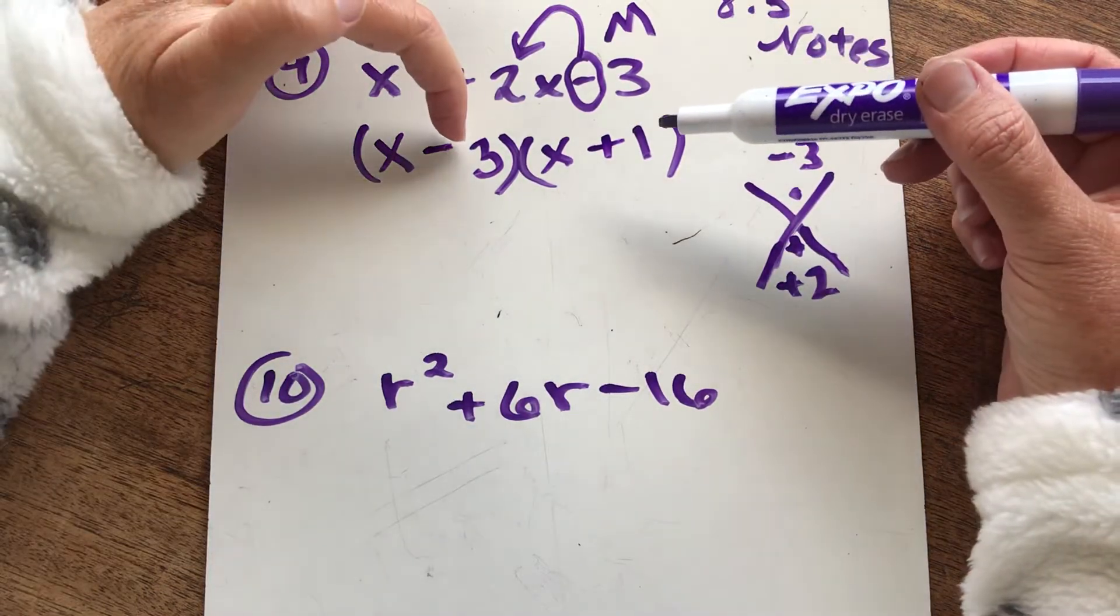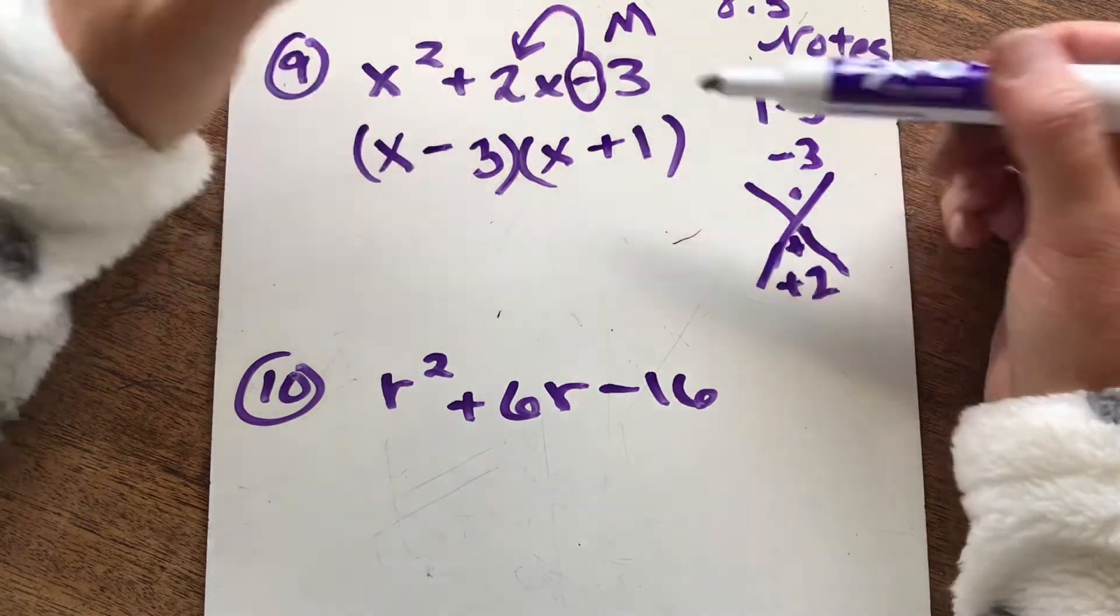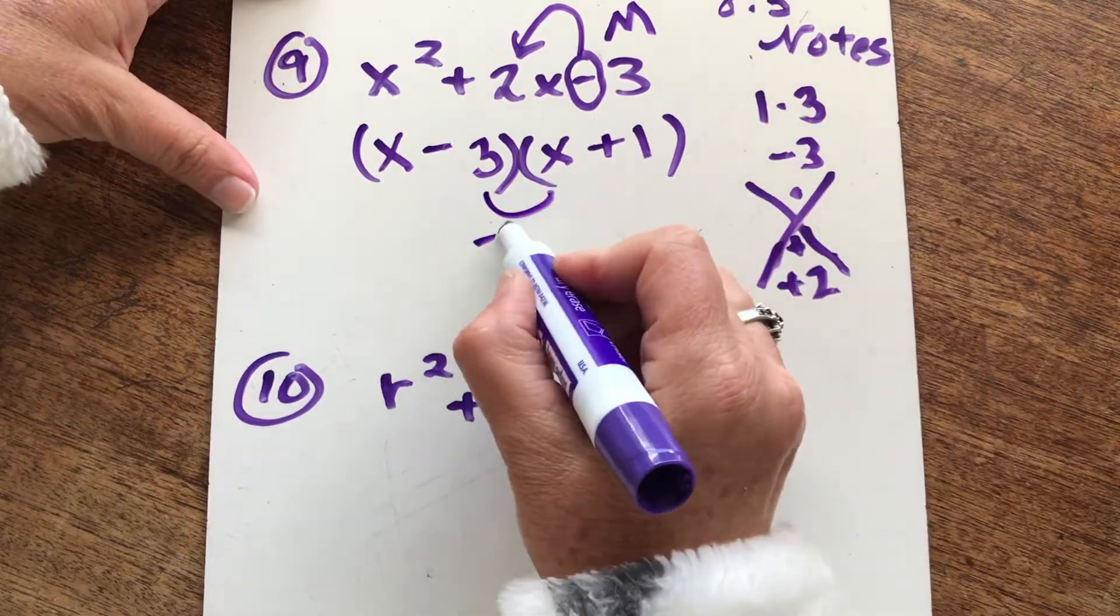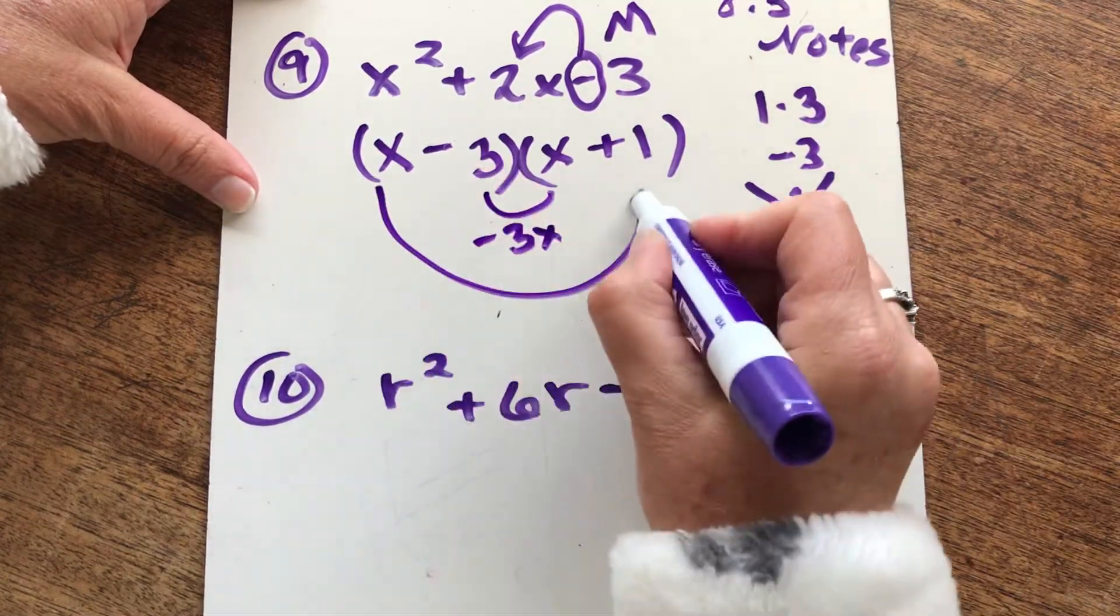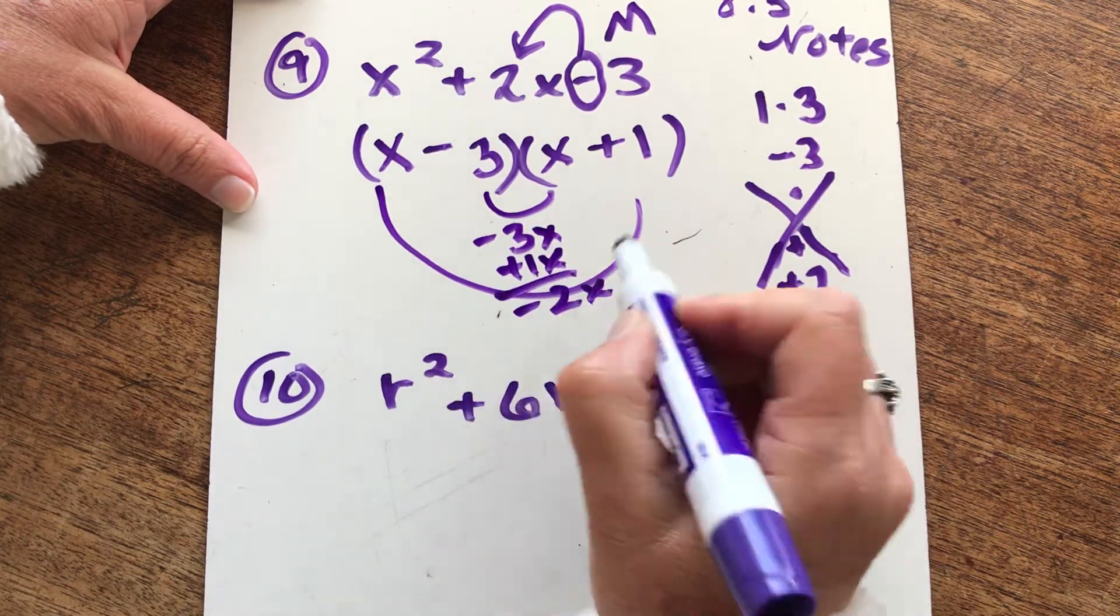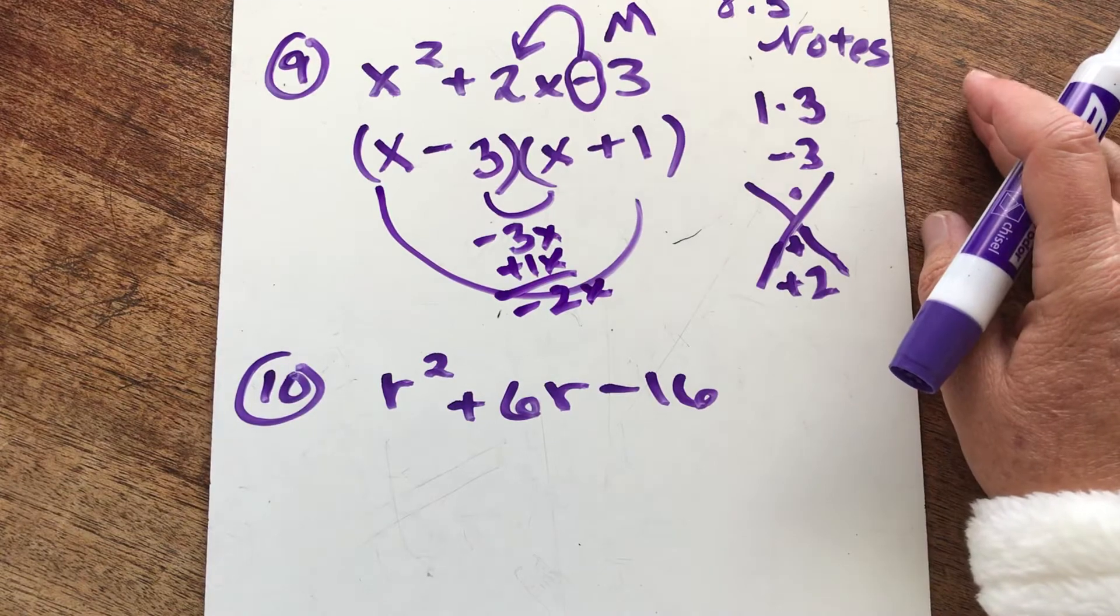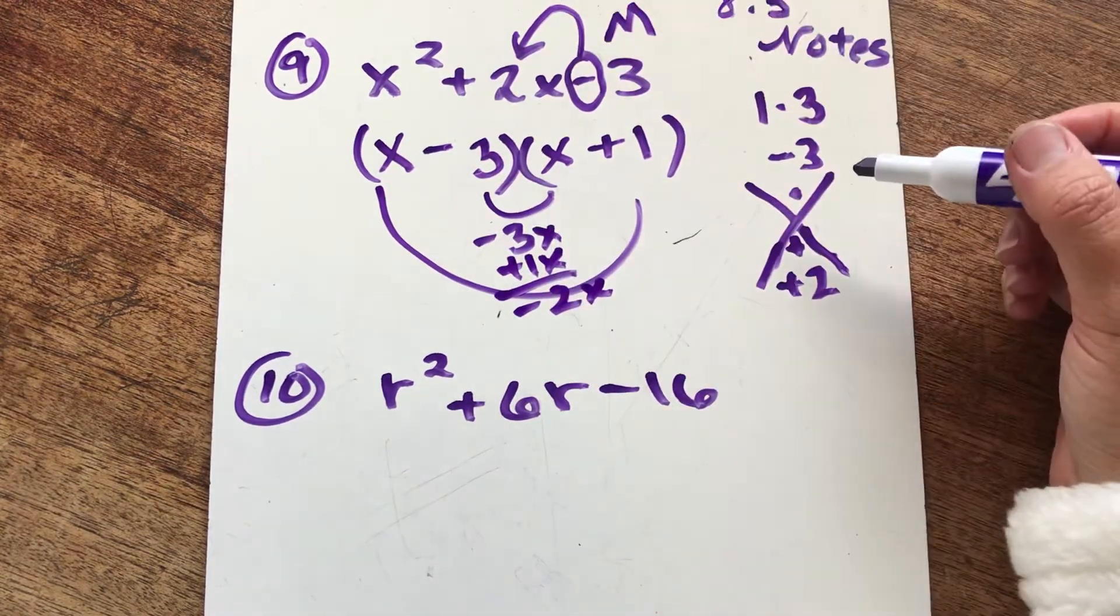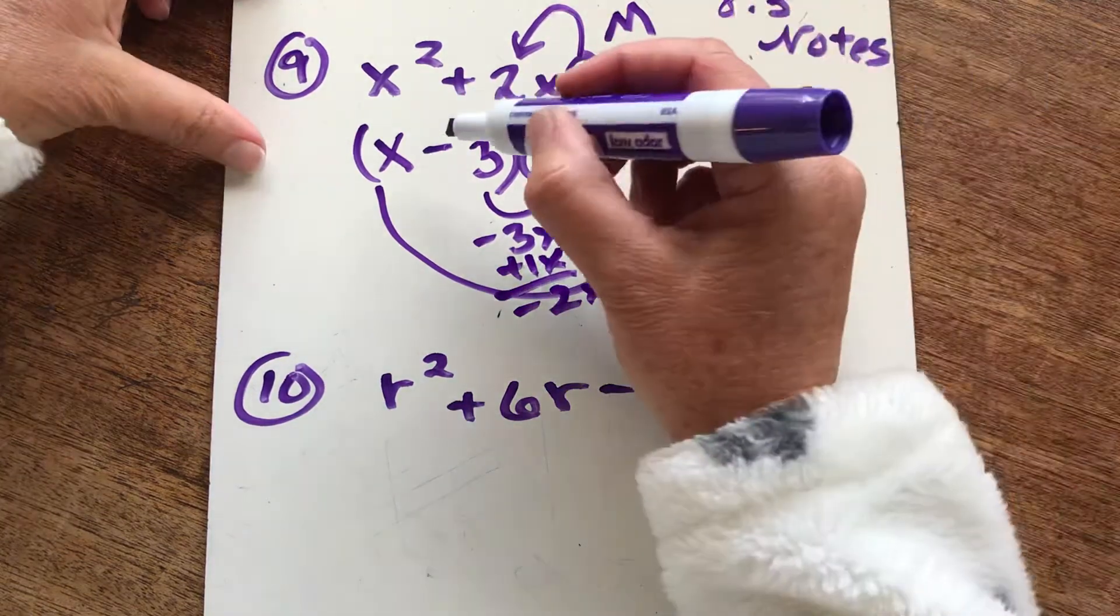Negative three times a positive one is negative three. That makes sense. X times X is X squared. And let's see the middle. Negative three X, positive one X. I would get negative two X in the middle. Womp, womp, womp. That is inaccurate. We have a positive two in the middle.